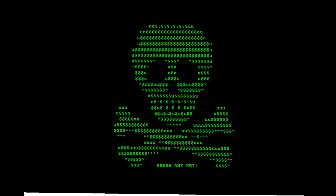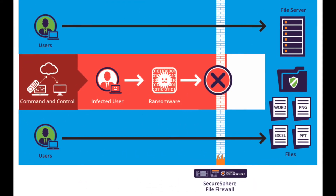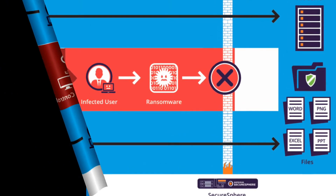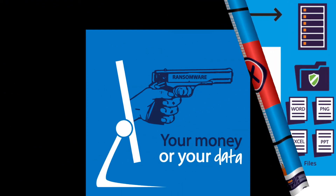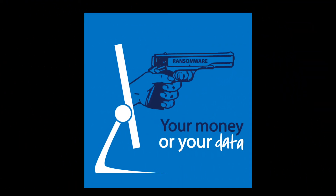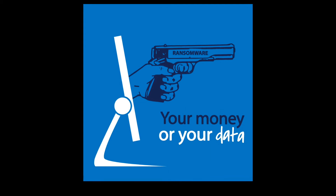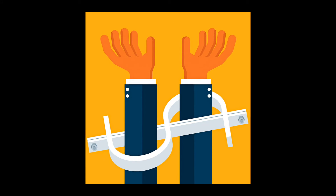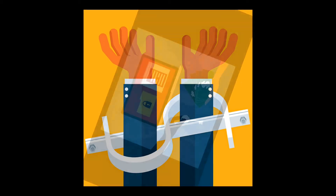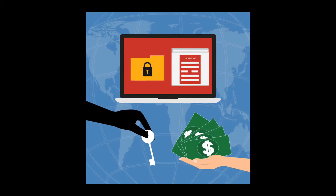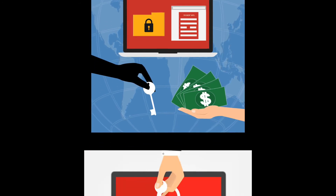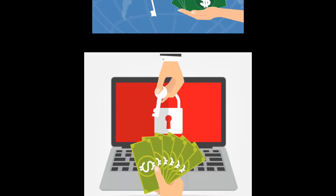The ransomware created through the Trojan Development Kit locks the device and displays a message to the victim demanding a ransom. Such tools not only make it easy for entry-level hackers to hack into Android devices, but also gives seasoned hackers an easier way to get the job done without spending a lot of time. Even hardened malware authors could find these easy-to-use kits an efficient alternative to putting the work in themselves.